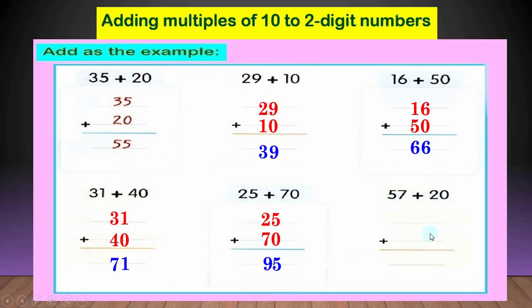another question: 57 plus 20. ادي الـ 57 وادي الـ 20. 7 will be down. 5 plus 2 equal 7. يبقى الانسر طلع 77.